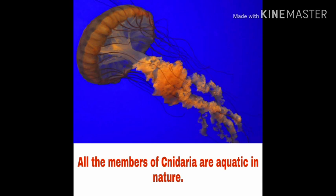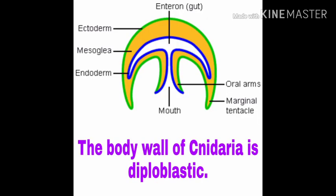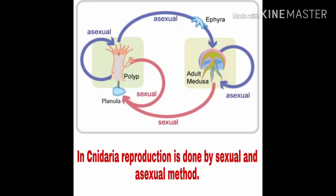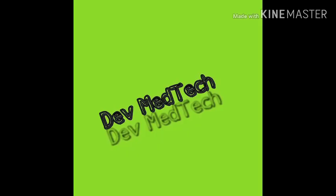Fourth point: all members of Cnidaria are aquatic in nature. Fifth point: the body wall of Cnidaria is diploblastic, meaning it is made up of two cell layers — the ectoderm and endoderm. Sixth point: in Cnidaria, reproduction is done by both sexual and asexual methods.